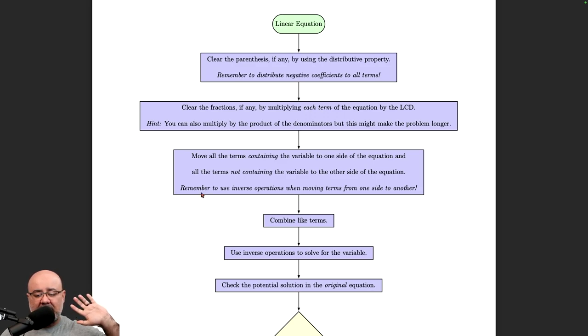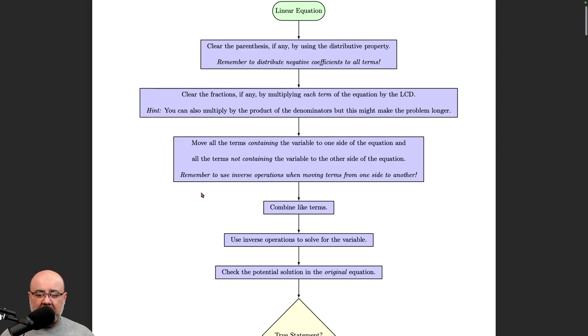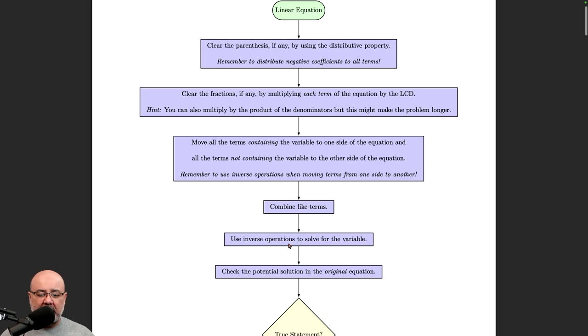Now once all the, let's say we're talking about x's, once all the x's are on one side, we combine those like terms. Once all the numbers or non-x terms are on the other side, we combine those like terms. And at this stage, we should get probably an equation that looks something like 5x equals 30, or something similar to that where you just have a certain number of x's and a single number on the other side. At that stage, just use the inverse operation again. It'll either be multiplication or division at this stage to solve for whatever the variable you're looking for is.